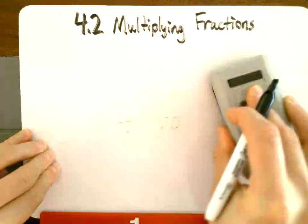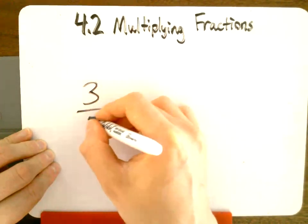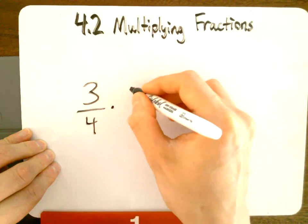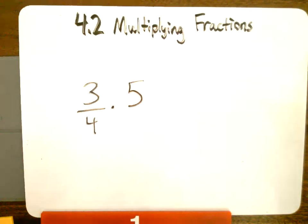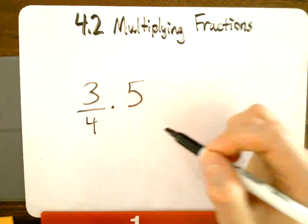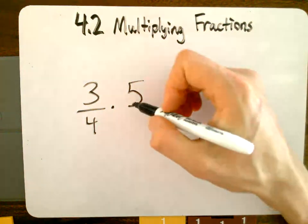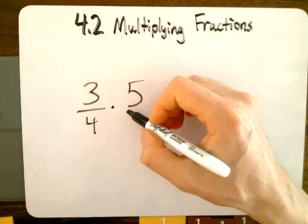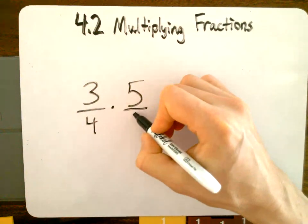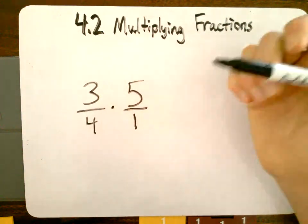One more thing to point out. Sometimes you're going to see something like this. 3 fourths times 5, for example. Now you're going to go, wait. Mr. Nelson, this isn't a fraction. Well, you can write any whole number as a fraction. Remember, a fraction is just division. So we need to divide the number 5 by something that will make it stay the same. And we can divide it by 1. Okay. So 5 over 1 is the same as 5.